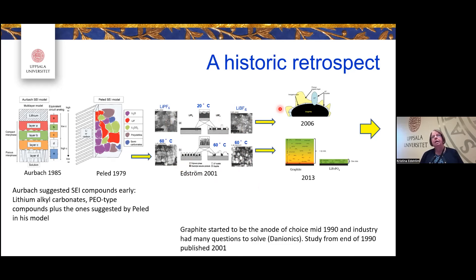We realized we needed to understand the SEI much more and with more techniques. Looking at the graphite electrode, we saw a heterogeneous mushy outer organic layer and a more homogeneous inorganic layer — lithium carbonates and similar compounds — on the lithium graphite surface, with lithium fluoride crystals visible within the organic layer further from the surface.